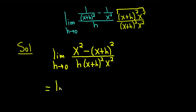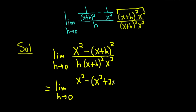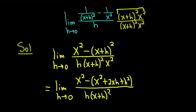This is equal to the limit as h approaches 0. We have x squared minus the expansion of (x+h) squared. Squaring the first term gives x squared, multiplying x and h and doubling gives plus 2xh, and squaring the last term gives h squared. All of this is over h times (x+h) squared — we want to leave that as is — and then x squared.